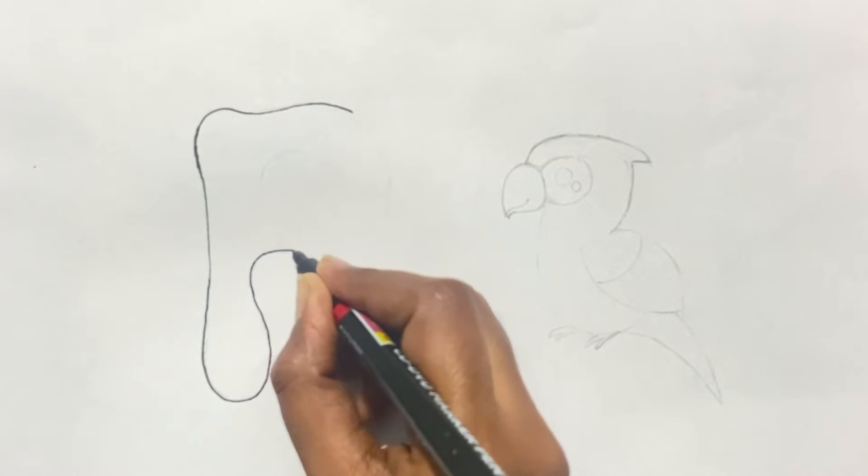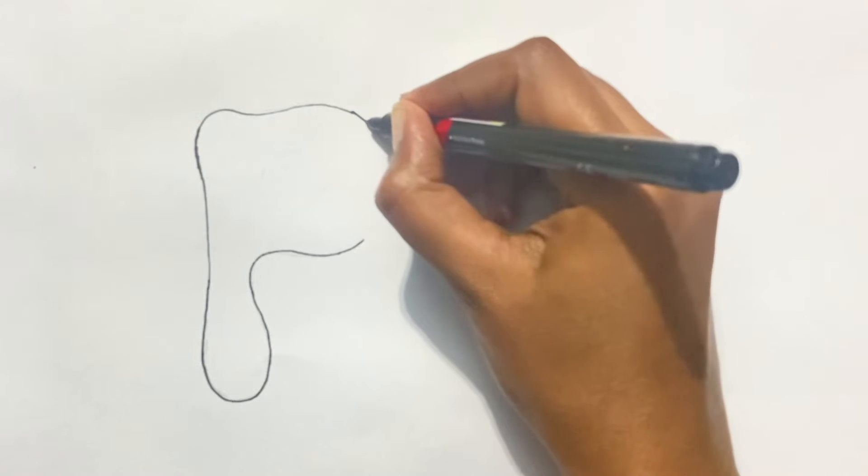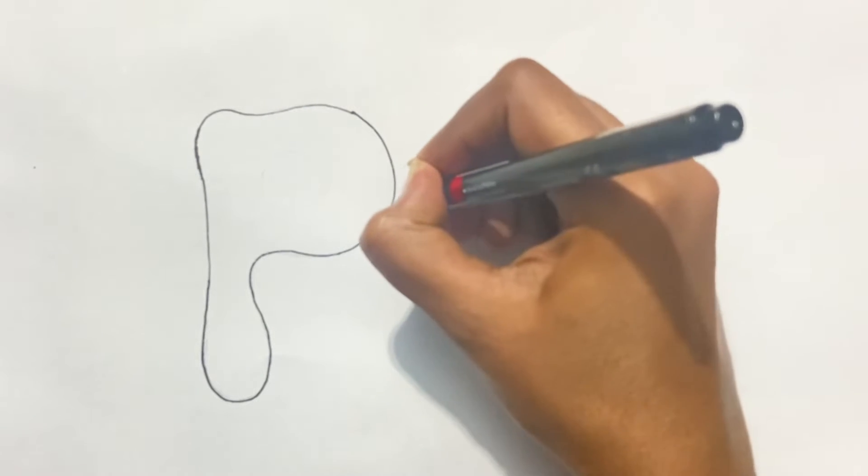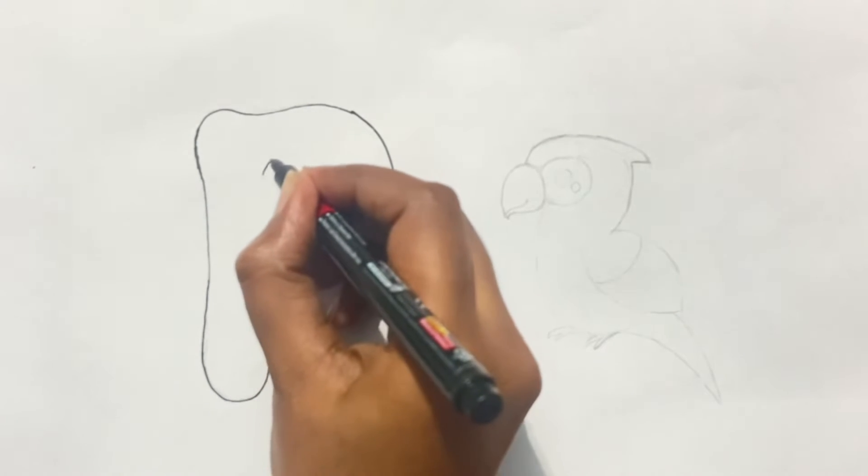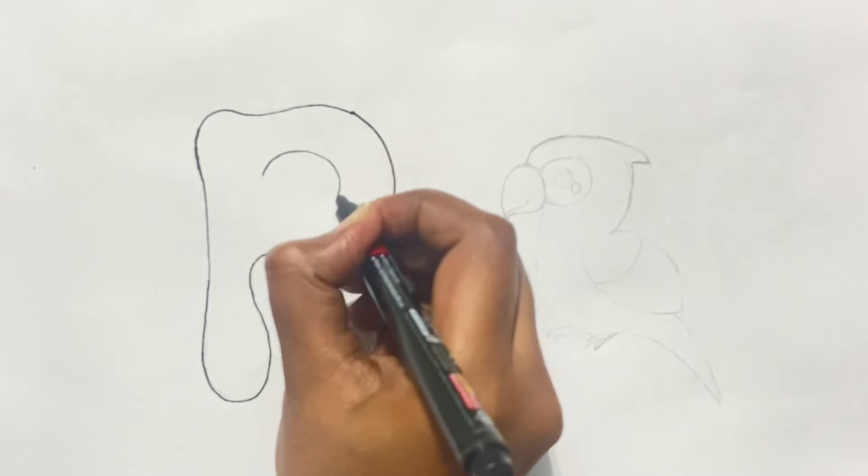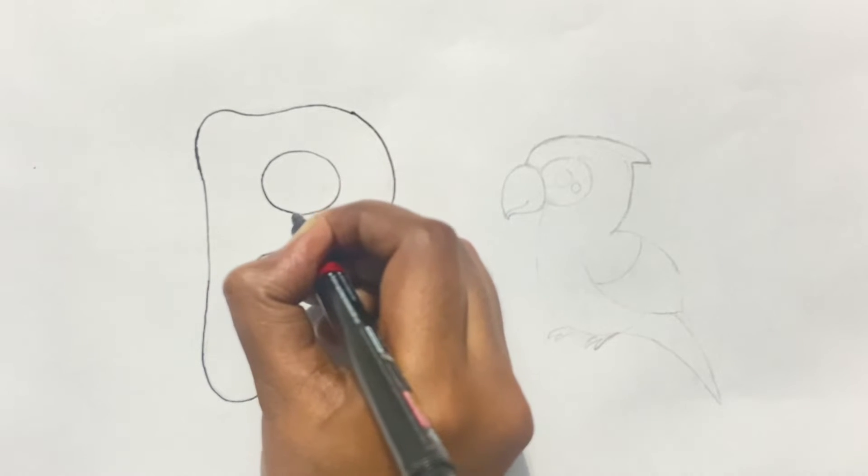After making the outer shape of P in a balloon shape, we will make a small circle inside the P to complete the whole letter like this. You don't have to be particular, just draw randomly.